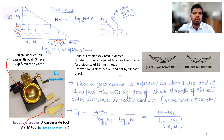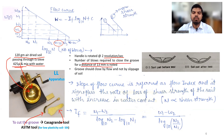We take 120 grams of air-dried soil passing through a 425-micron sieve and mix water to form a paste. This paste is filled in the cup and, after placing it as per Indian Standard guidelines, we rotate the handle at 2 revolutions per second. The number of blows required to close the groove for a distance of 30 mm is noted. It is important that the groove should be closed by flow, not by slippage.